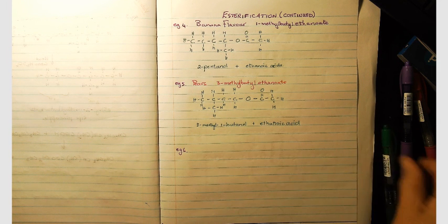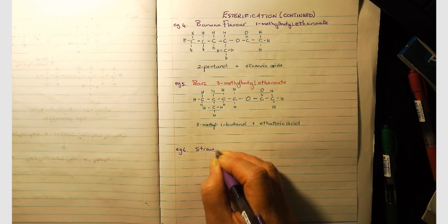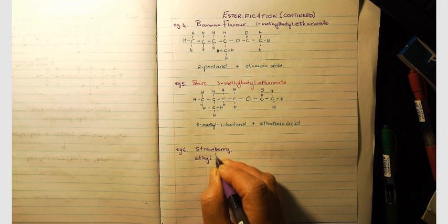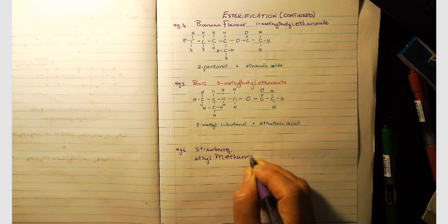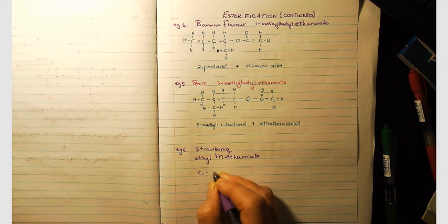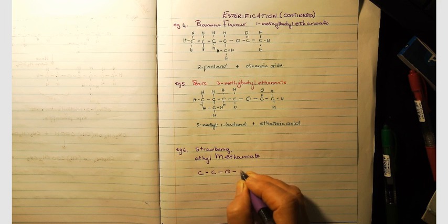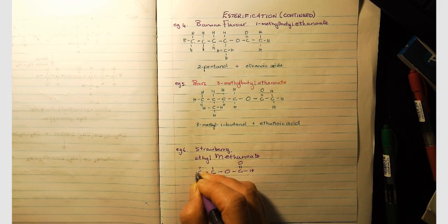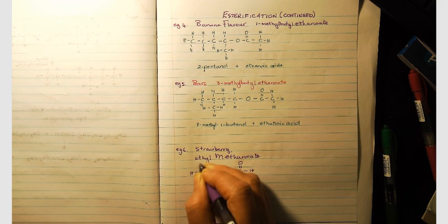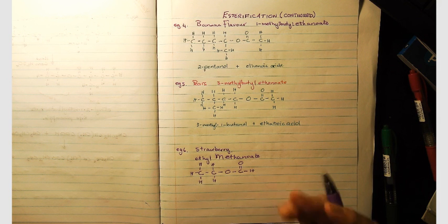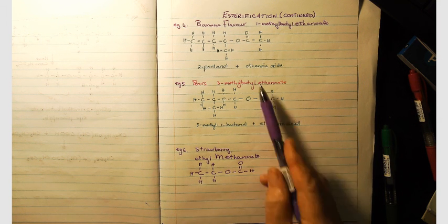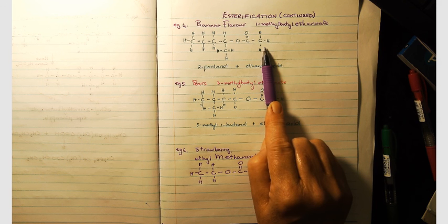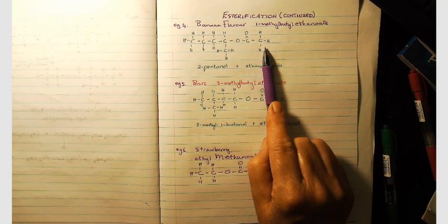The last one I want to discuss is the flavor of strawberries, and that is ethyl methanoate. You've got your ethyl coming from ethanol and your methanoate from methanoic acid - just the opposite of the second example we did in the previous video.